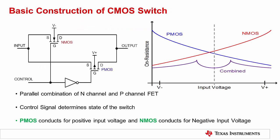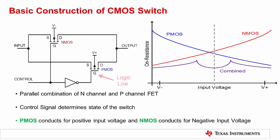Before moving to multiplexer basics, let's first understand the basic construction of a CMOS switch and its characteristics. The slide here shows the typical construction of a CMOS switch. A CMOS switch is formed by connecting an N-channel MOSFET and a P-channel MOSFET in parallel, as shown here. This particular arrangement allows us to switch both positive and negative voltages at the output with equal ease. A logic high signal at the gate of the NMOS will enable this MOSFET and allow negative voltages to pass to the output, while a logic low at the gate of the PMOS will enable this MOSFET and allow positive voltages to pass to the output.